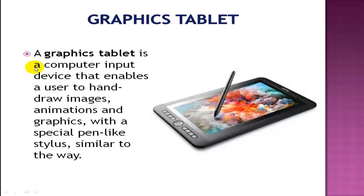Graphic Tablet: A graphic tablet is a computer input device that enables a user to hand-draw images, animations, and graphics with a special pen-like stylus, similar to the way one draws on paper. A graphic tablet is a board covered by a touch-sensitive membrane. A stylus is a pointer used with a puck, a mouse-like device. The stylus and puck are used to draw directly on the tablet.